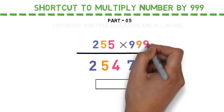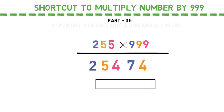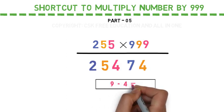Now take the last 9 and subtract 4. We get 5. Write it down.